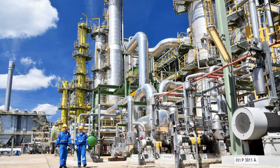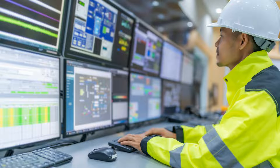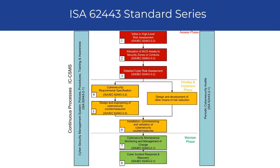First, let's clarify a few terms. An IACS is an Industrial Automation Control System. It refers to a category of technology systems and devices used in various industrial processes and critical infrastructure to automate, monitor, and control operations. IACS encompasses a wide range of equipment and software used in manufacturing, energy, utilities, transportation, and more industries. The ISA 62443 Standard Series was designed by the International Society of Automation to help organizations in these industries establish robust cybersecurity practices to protect IACS components and infrastructure from cyber threats, vulnerabilities, and attacks.